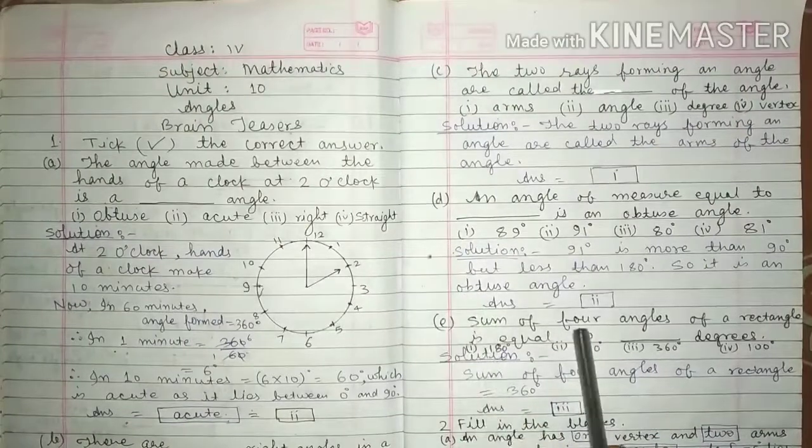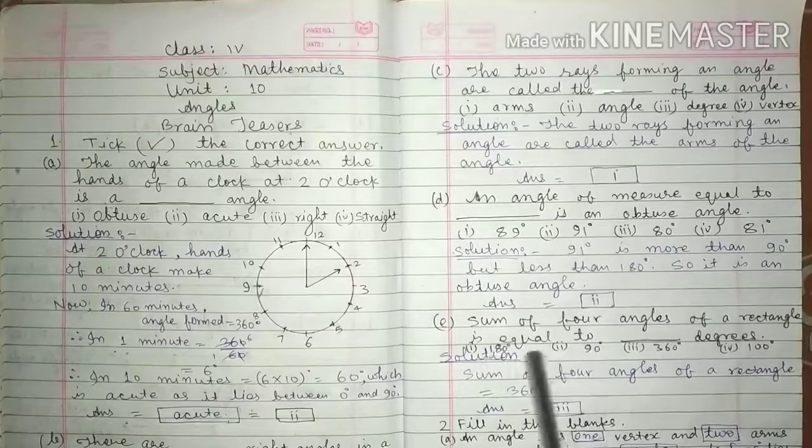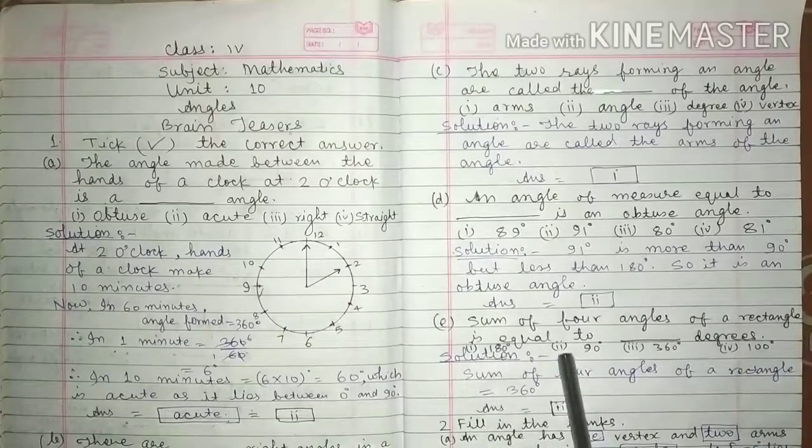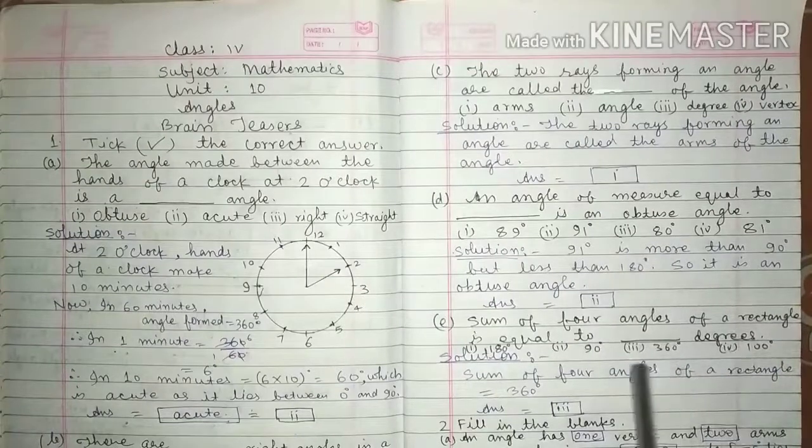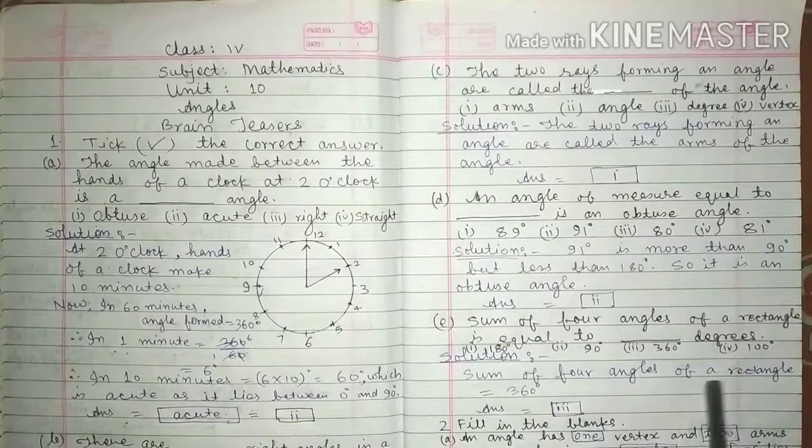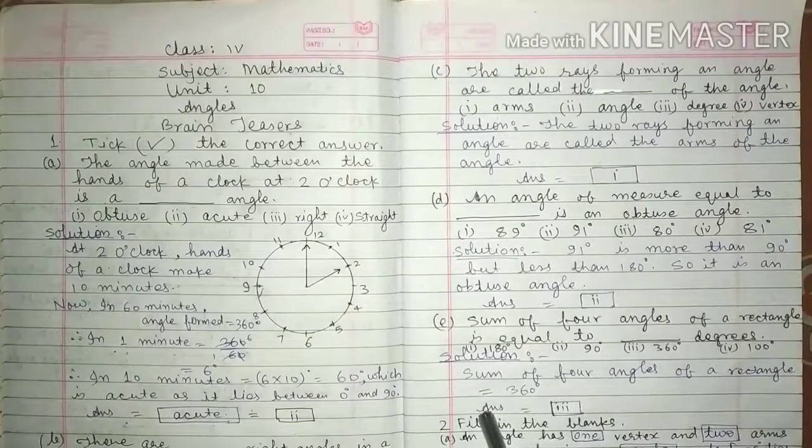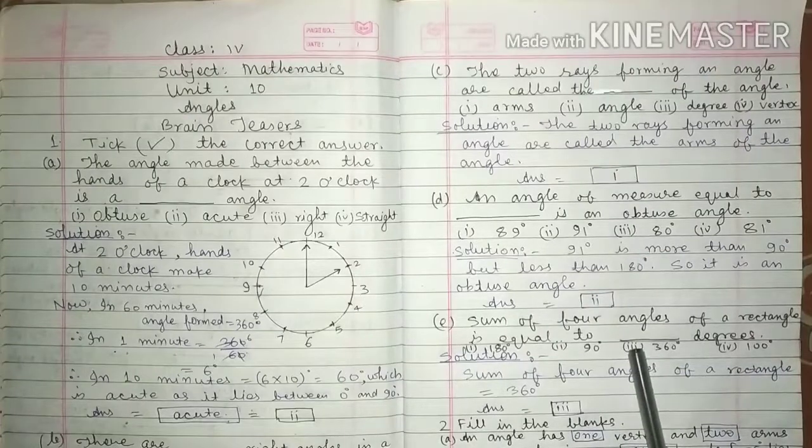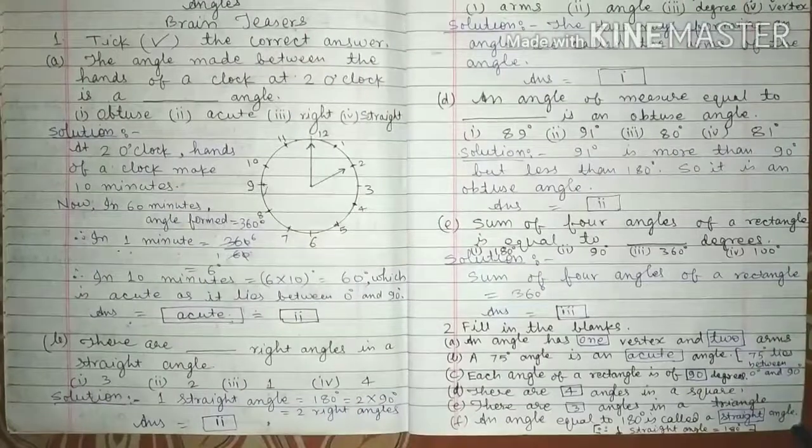E, sum of the 4 angles of a rectangle is equal to first 180 degree, second 90 degree, third 360 degree, fourth 100 degree. For the solution of this question we write sum of 4 angles of a rectangle is 360 degree. So answer is third. This is the answer of question number E. Now question number 2.